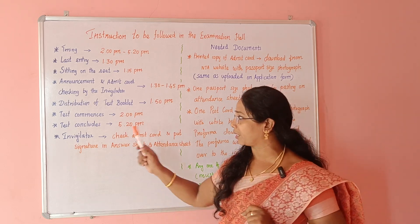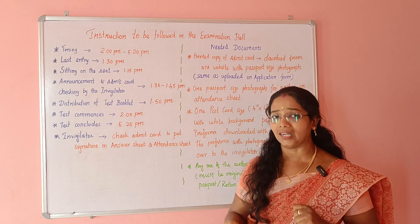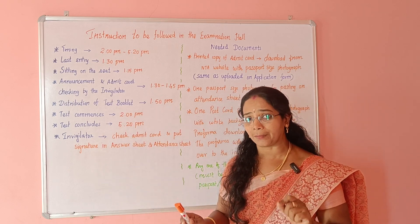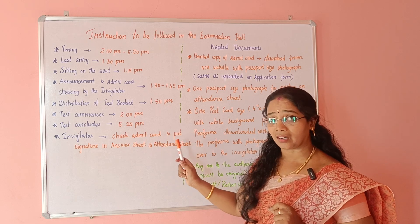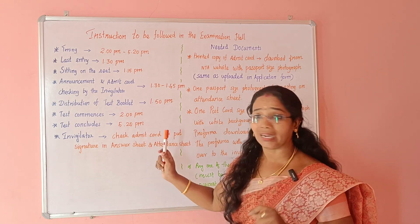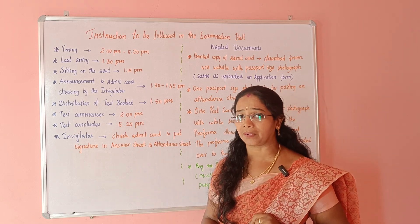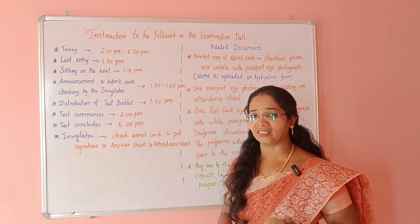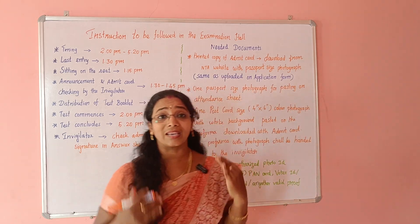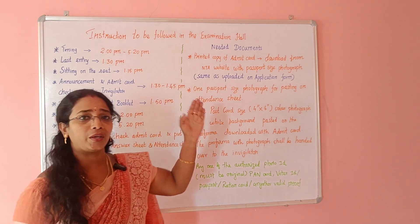At 1:52pm, admin card line sign and put signature in answer sheet and attendance sheet. The invigilator will sign the attendance sheet. If you want to see what you need to do — first, you need to print a copy of the admit card.